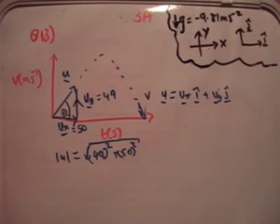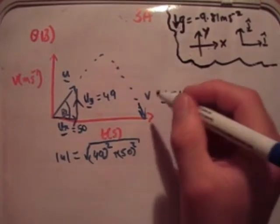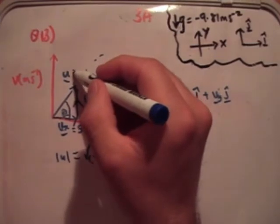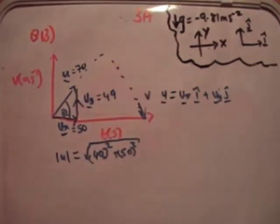The answer for the magnitude of the velocity is 70 meters per second, or approximately so.